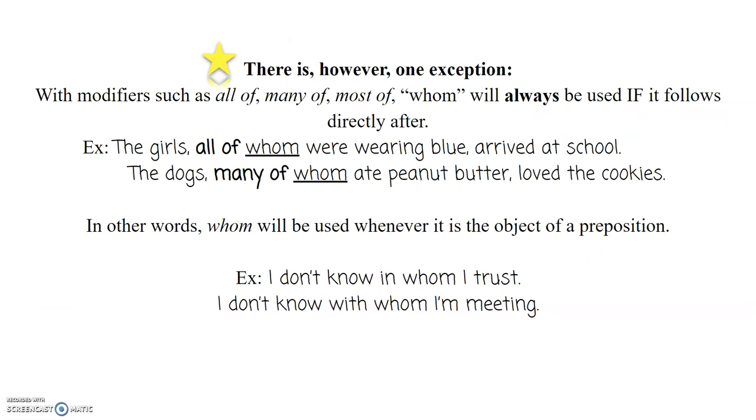Here's one other thing though. Whenever you see a quantity word, such as all of, many of, most of, plus the of, you're always going to use whom when it follows directly after. So we've got the girls, all of whom were wearing blue, arrived at school. Our quantity word all, our preposition of, we know we're going to have that whom.